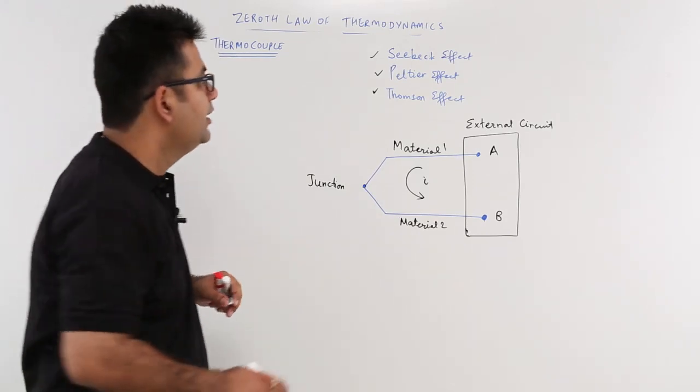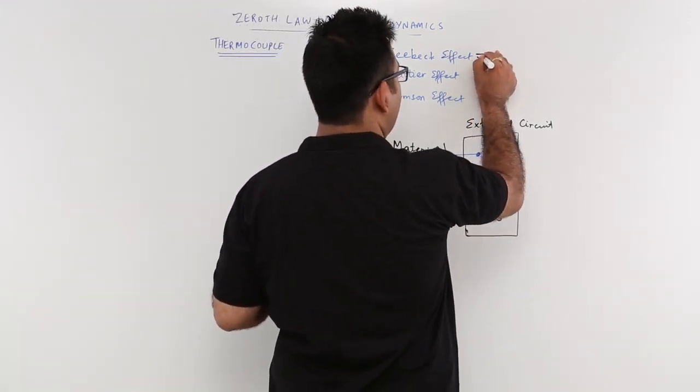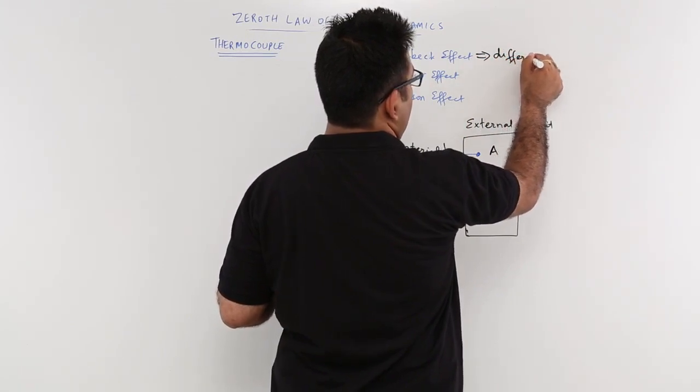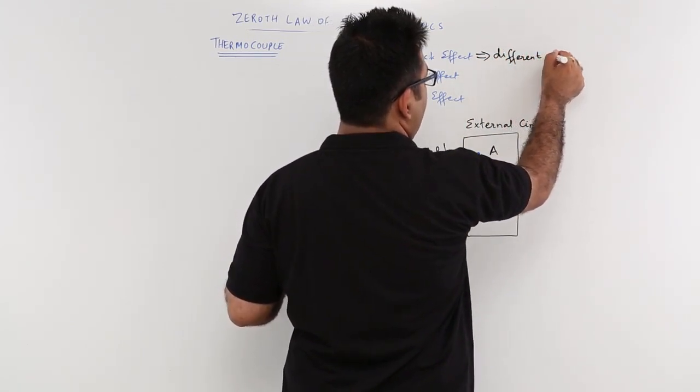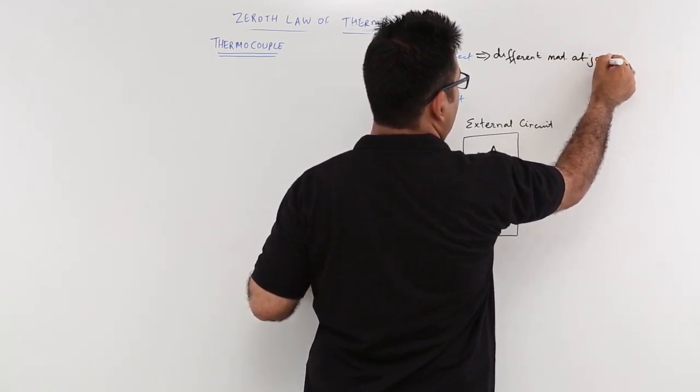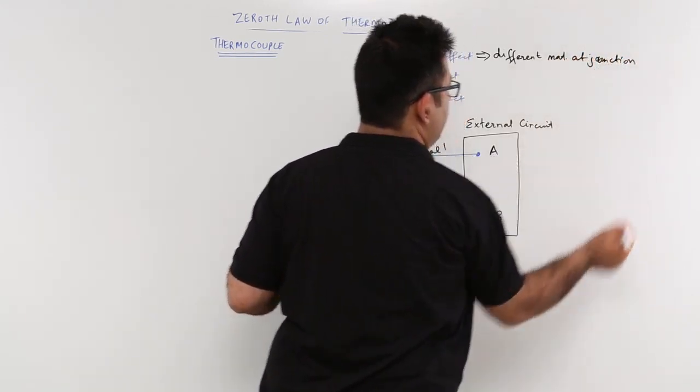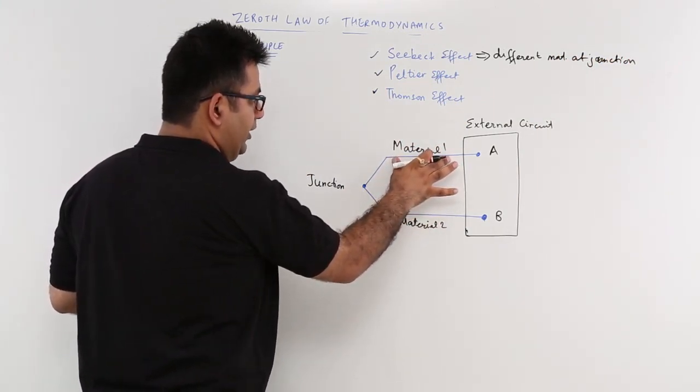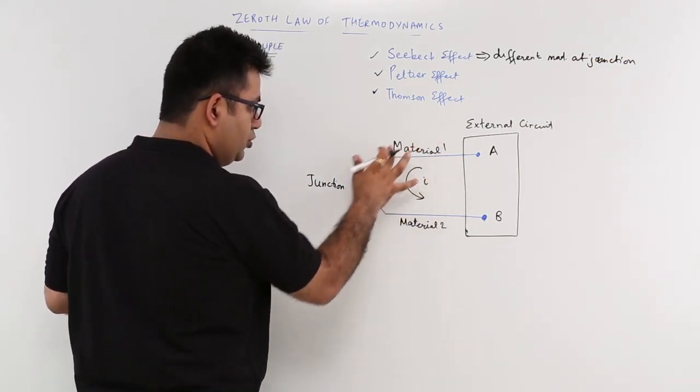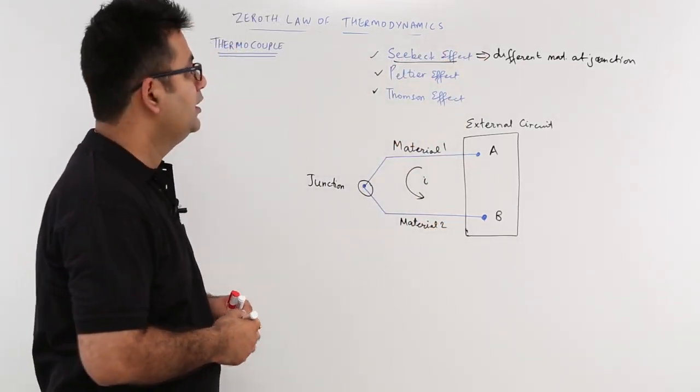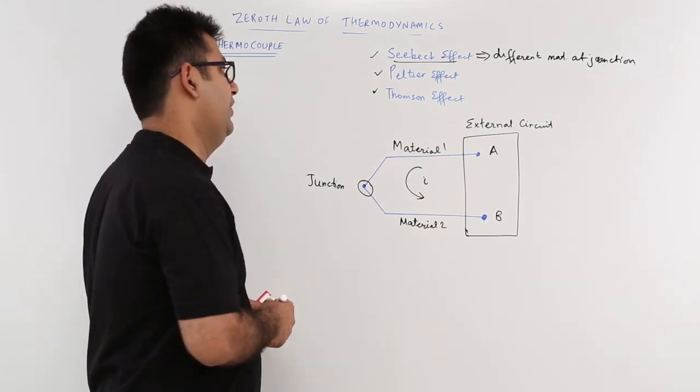Now, Seebeck effect is due to the different materials at a junction. So if you look at this diagram, this is material 1, this is material 2. When you join them at this junction, you have the phenomena of Seebeck effect.